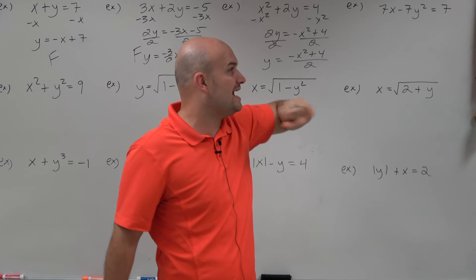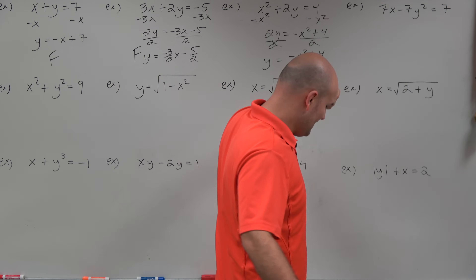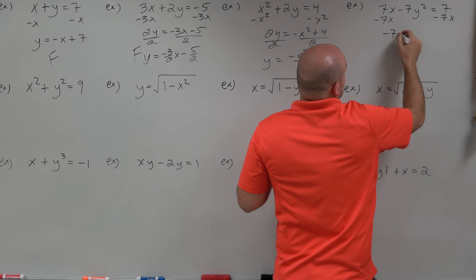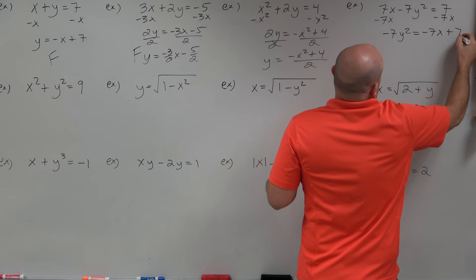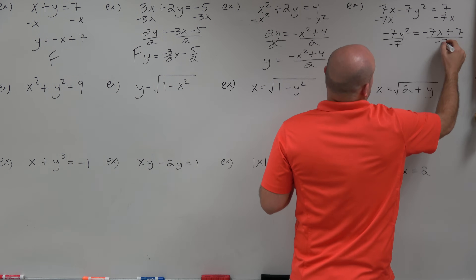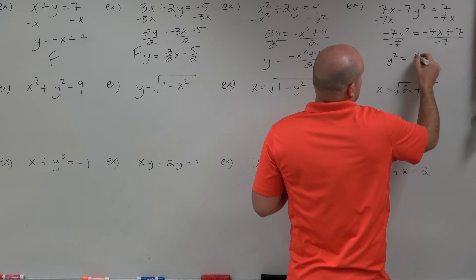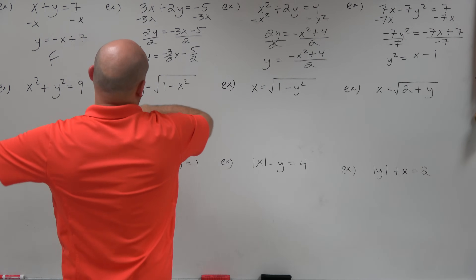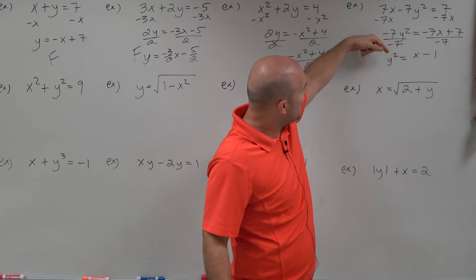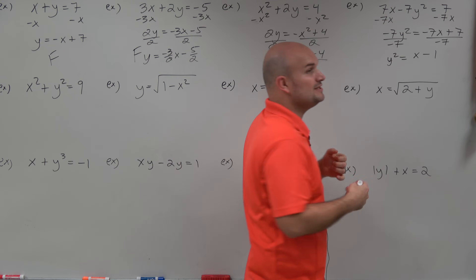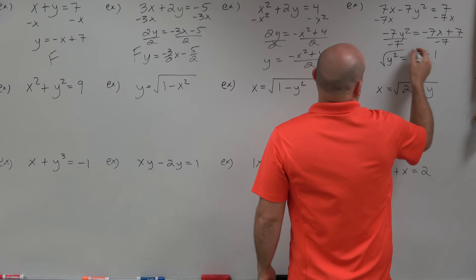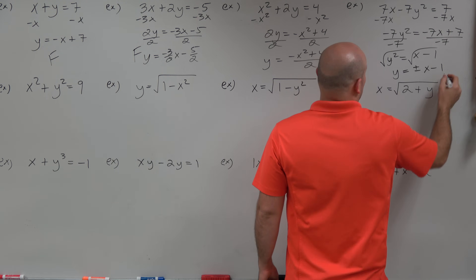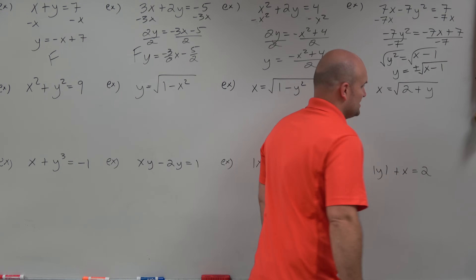Over here we have the same thing, but now y is squared. When following inverse operations and isolating y, I divide by negative 7 on both sides, and I have y squared equals x minus 1. I've applied all my inverse operations — add, subtract, and multiply. But now my inverse operation is squaring, so to undo squaring I need to take the square root. The issue is when I introduce the square root, I now have to include plus or minus the square root of x minus 1.